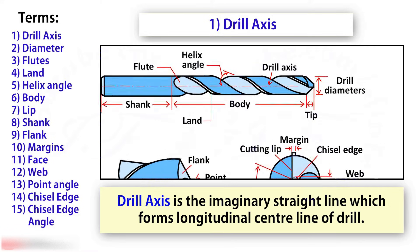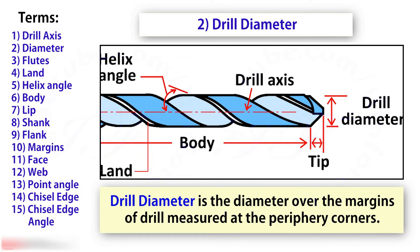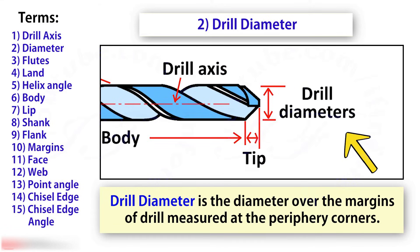First is the drill axis, which is an imaginary straight line that forms the longitudinal center line of the drill. Drill diameter is the diameter over the margins of the drill, measured at the periphery corners.